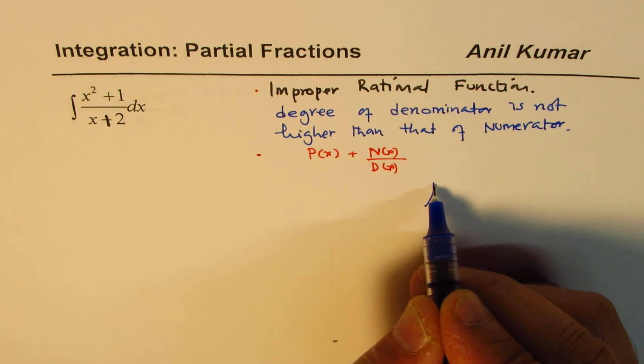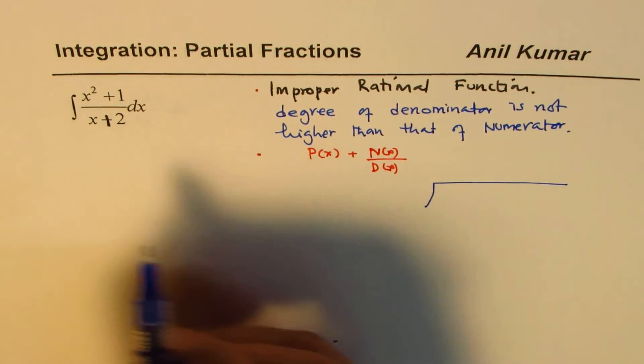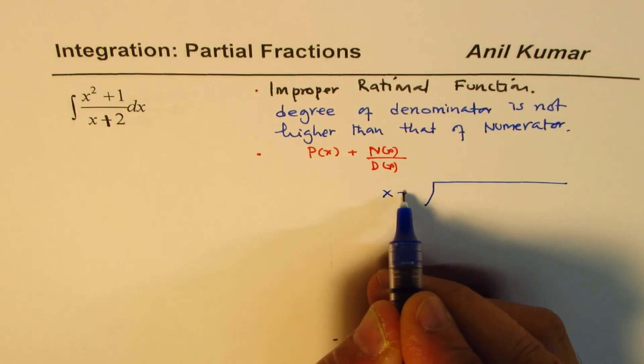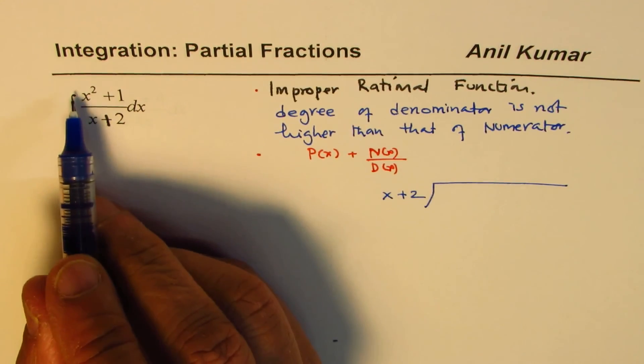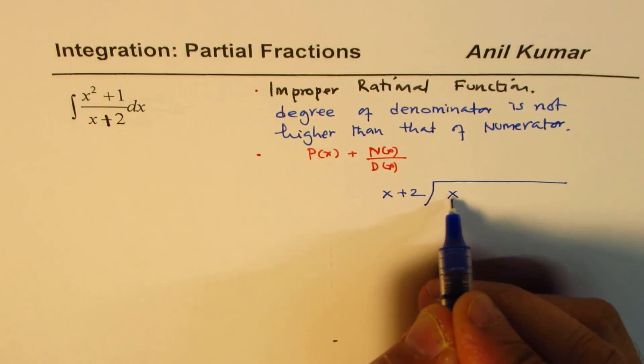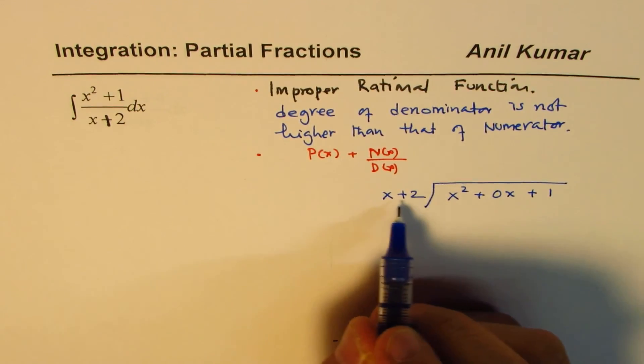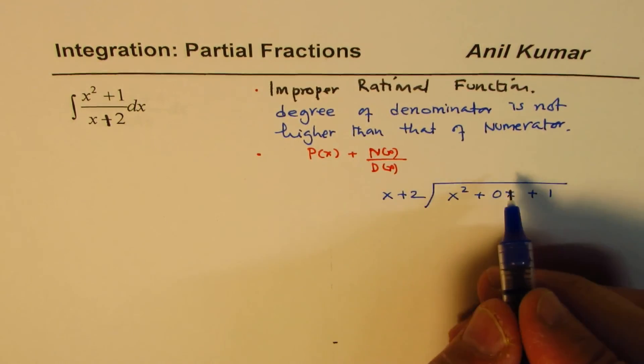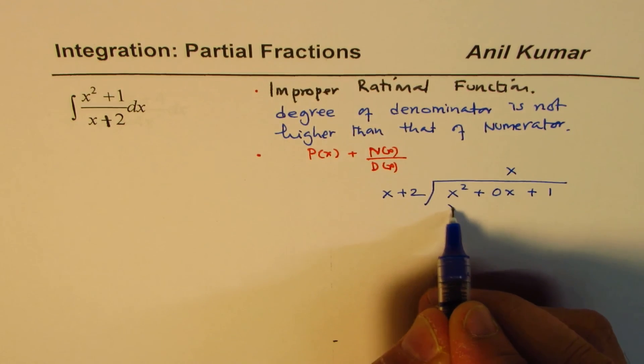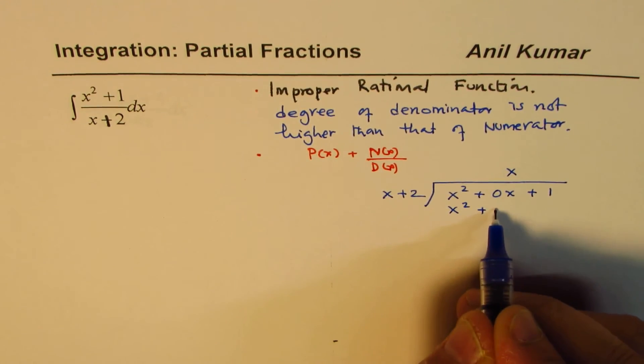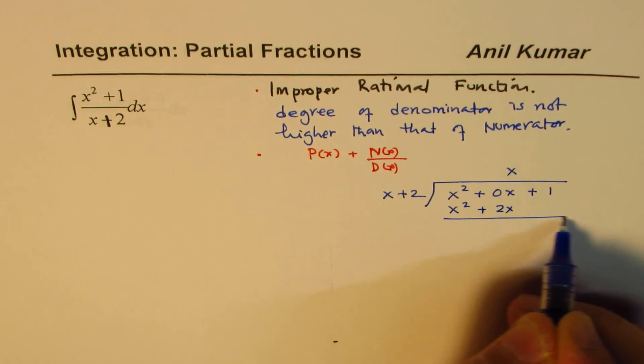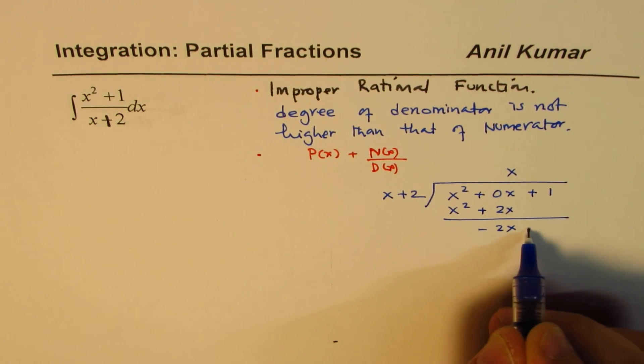So what we need to divide is x plus 2 in this case. And x squared plus 1, that is x squared plus placeholder 0x plus 1. So when you divide, you can multiply by x first. So we get x squared plus 2x. And when you take away,